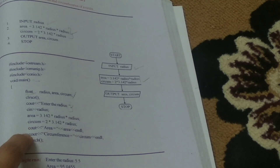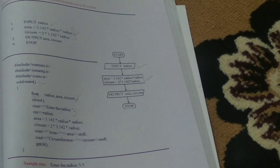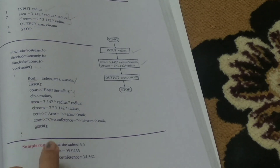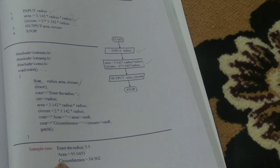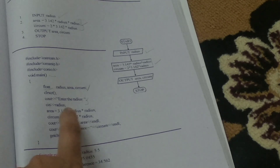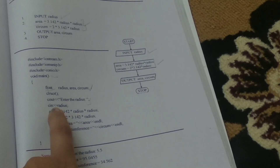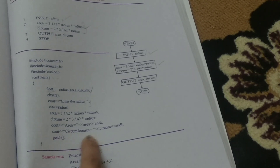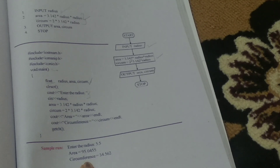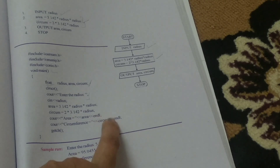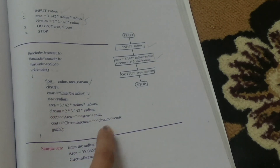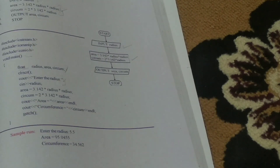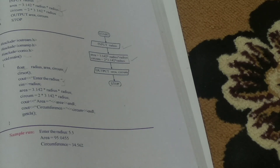Now the values are printed. The cout area statement prints the value stored in the area variable, which is 95.045. The cout circumference statement prints the value stored in the circum variable, which is 34.56. This is how the program calculates and displays the area as well as circumference of a circle.